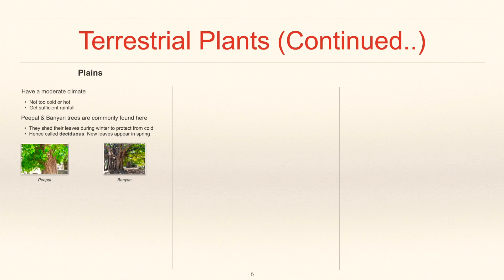Peepul and bunyan trees are commonly found here. They shed their leaves during winter to protect from cold, hence called deciduous. The new leaves appear in spring.